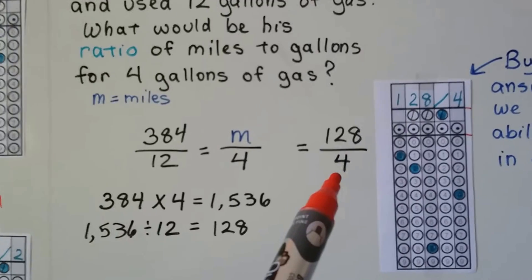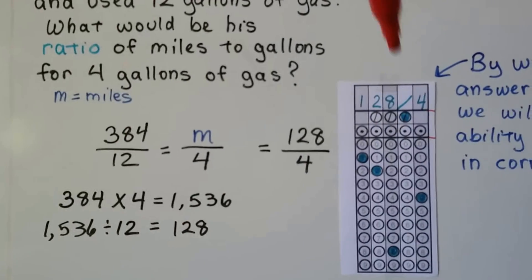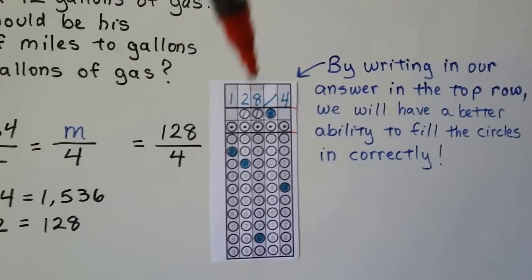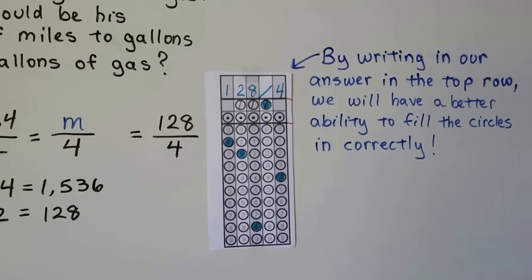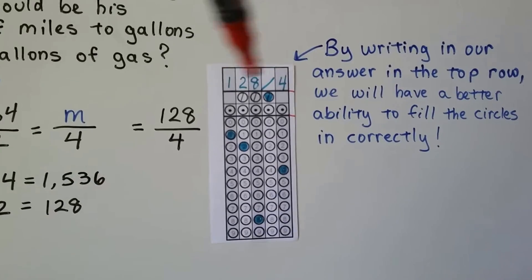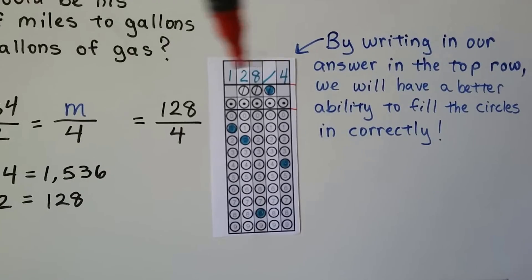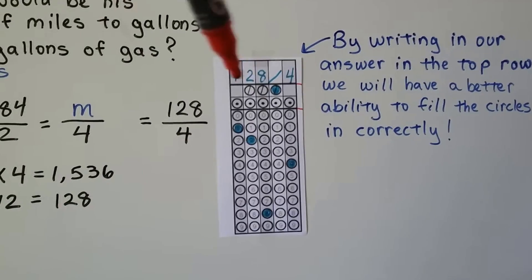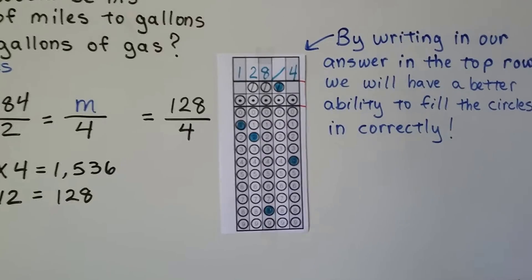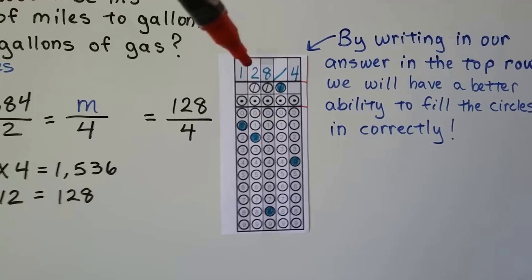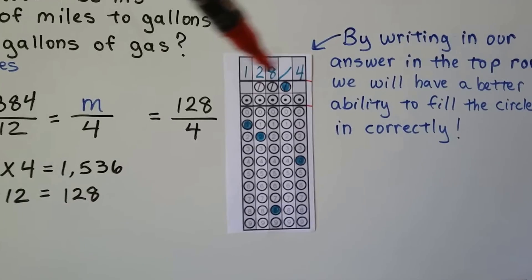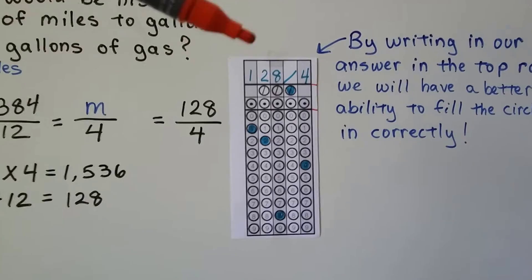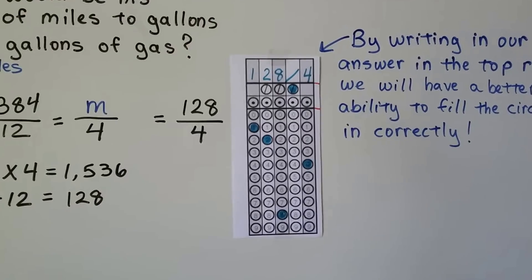So 128 over four would be the answer and we would write 128 slash four and by writing in our answer in this top row, because it says you don't have to, but by writing it in this top row, you can have a better ability to fill the circles in correctly, because again, it would be a shame if you skipped writing it in up here and then you filled the circles in wrong. So do yourself a favor and do whatever it takes to help yourself succeed. And if it's something silly as writing it in up here to make sure you do it correctly, then do it. You wouldn't want this to be the one problem that kept you from passing, would you?